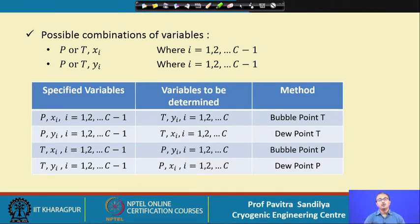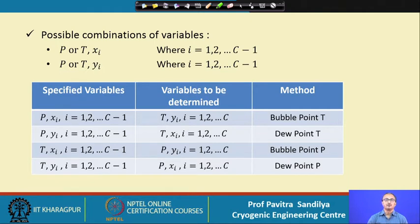Once we know the pressure, temperature, and composition, we can find out all other properties. With these prescriptions we are able to characterize a system completely.